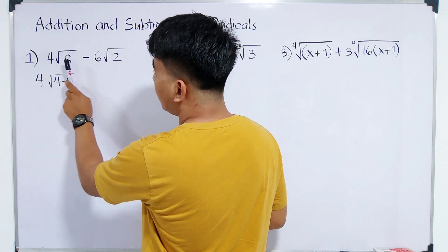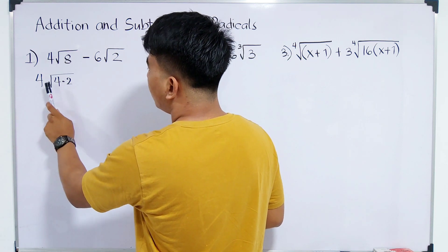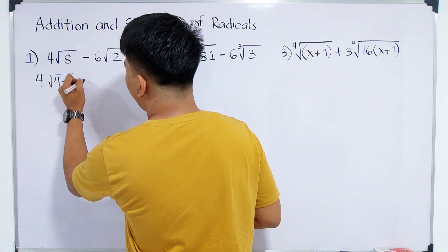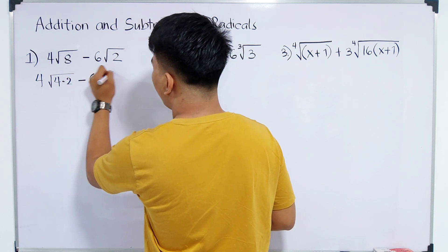Again, I factored out 8. It became the square root of 4 times 2. So minus, for the second one, we have minus 6 times the square root of 2.